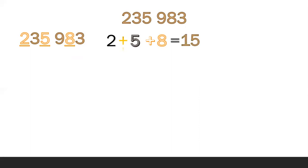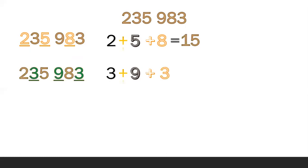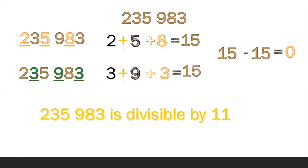Another example: 235,983. The digits in the odd places are 2, 5, and 8. Get the sum: 2 plus 5 plus 8 equals 15. The digits in the even places are 3, 9, and 3. Get the sum: 3 plus 9 plus 3 equals 15. Then 15 minus 15 equals 0. Therefore, 235,983 is divisible by 11.